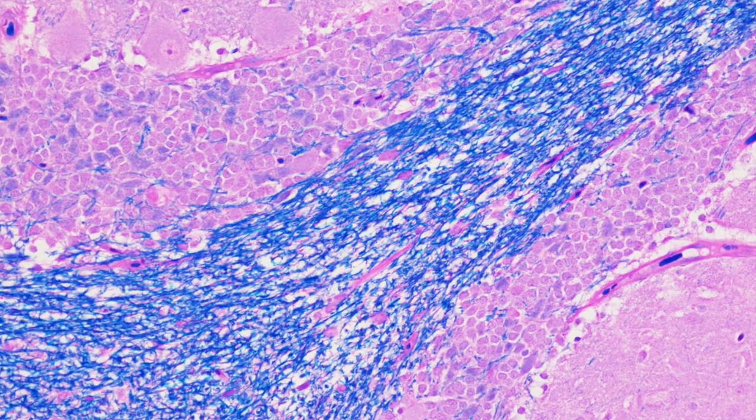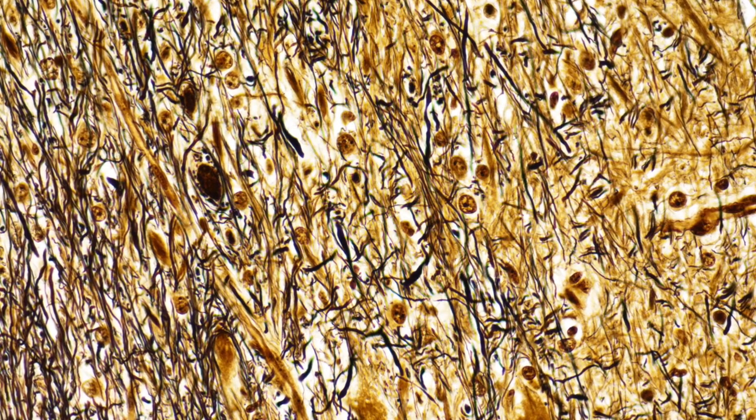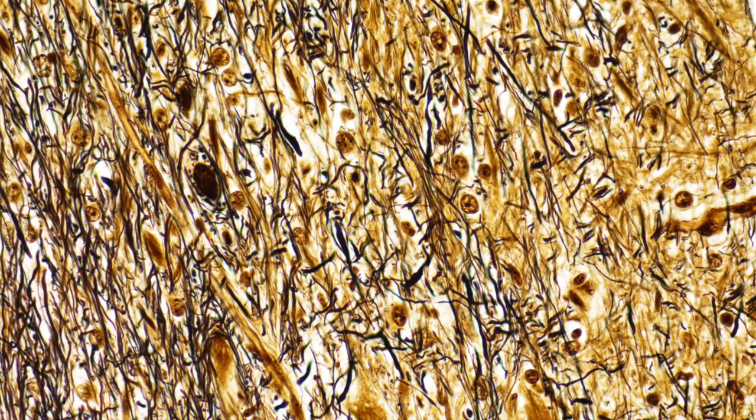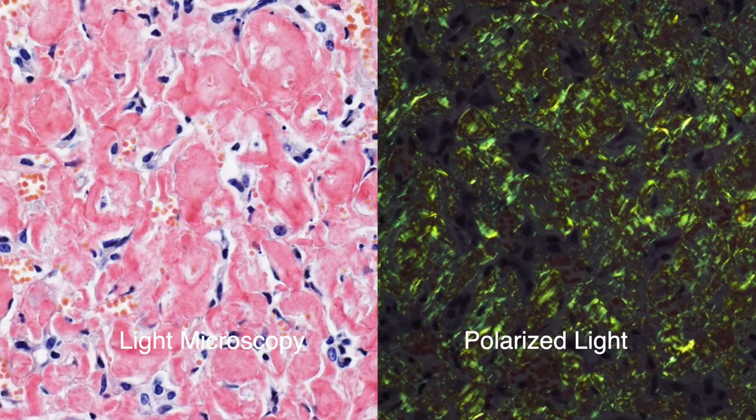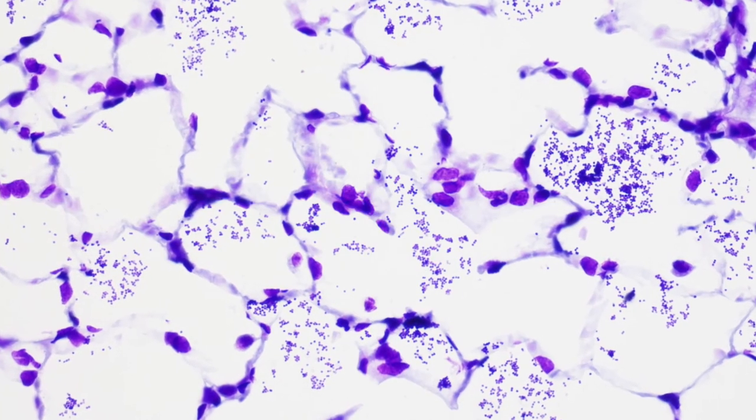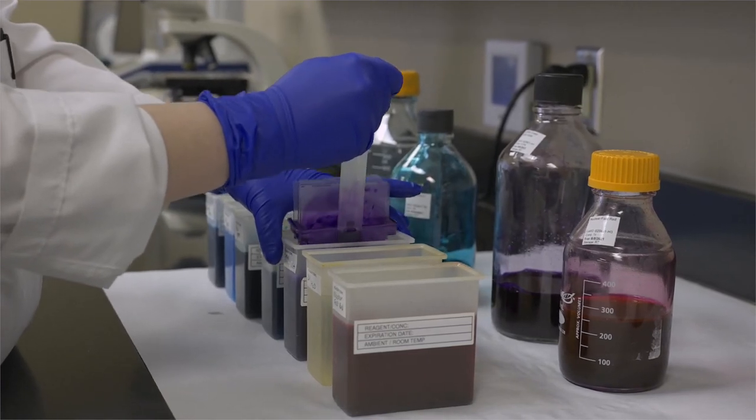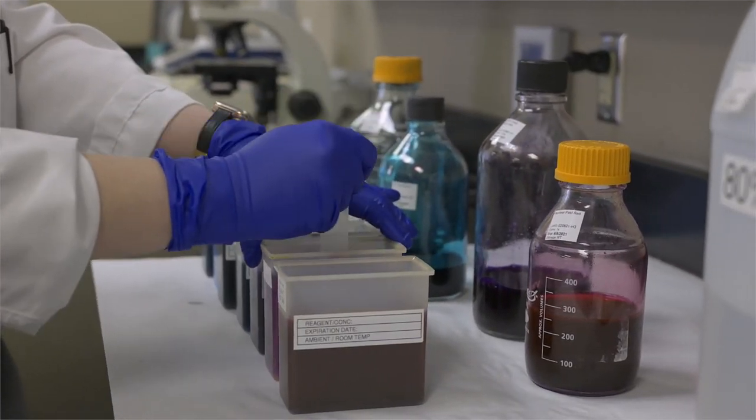Luxol Fast Blue to stain myelin. Bielschowski to demonstrate neurofibrils, axons, dendrites, neurofibrillary tangles, and senile plaques. Congo Red to identify amyloid and Gram to detect bacteria. We offer four different chemical stains on our ground section plastic slides. The most commonly used stain is pentachrome.